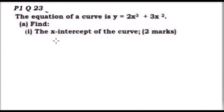Question number 23. We are told the equation of a curve is y equals 2x cubed plus 3x squared. Part a: find the x-intercept of the curve. The x-intercept is where the graph cuts the x-axis. At that point, the value of y is zero, so at the x-intercept, y equals zero.